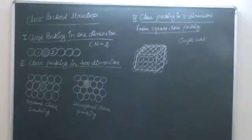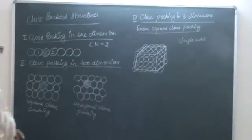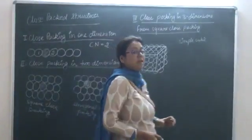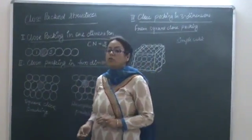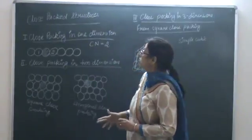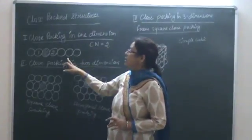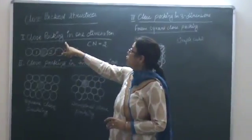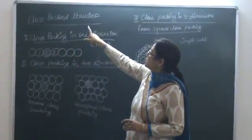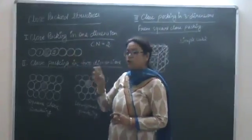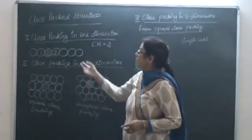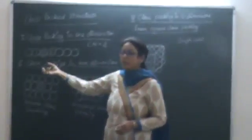The next topic we are going to do today is close packed structures. Close packed structures means how closely we can pack the constituent particles. We assume that the constituent particles are spheres. It is known as a close packing structure in which the constituent particles are placed in such a manner that they are lying closest to each other.